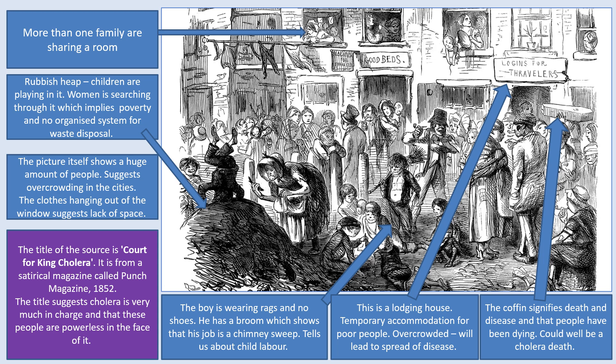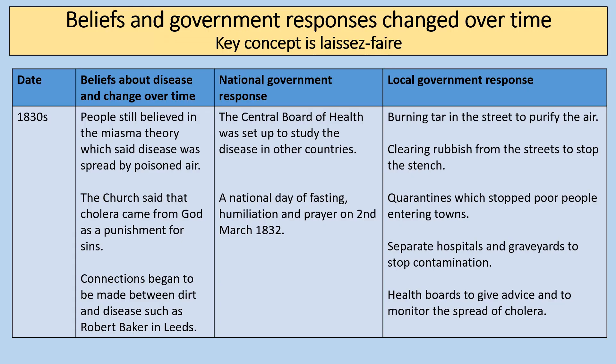People believed in three main causes of cholera: miasma, religious causes, and contagion. An important source is the 'Court for King Cholera' cartoon from Punch magazine, 1852. The title suggests cholera is very much in charge and people are powerless. It shows more than one family sharing a room, a huge rubbish heap children are playing in, implying poverty and no organised waste disposal, overcrowding, a boy wearing rags who is probably a chimney sweep illustrating child labour, a lodging house for poor people, and a coffin signifying death — very likely a cholera death.